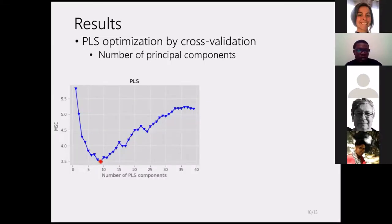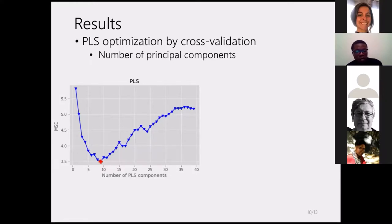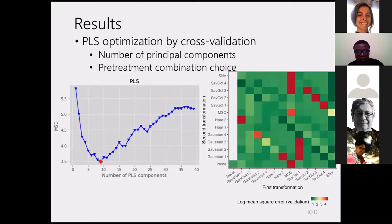The results obtained when optimizing the number of PLS principal components show that, for example, taking nine components minimizes the mean square error, while using all 41 components increases it. This optimization helps us choose the number of components that minimizes the mean square error. We applied the same process to choose the best pre-treatment combination that also minimizes the mean square error.